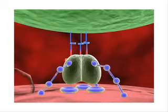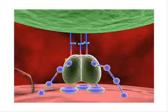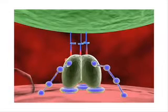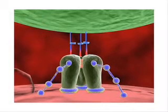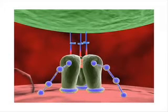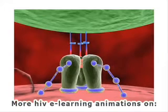Second, coreceptor binding: a conformational change occurs in GP120, allowing it to bind to the chemokine coreceptor CCR5 or CXCR4. In the absence of CD4 binding, ENV cannot interact with a coreceptor and infection does not occur.